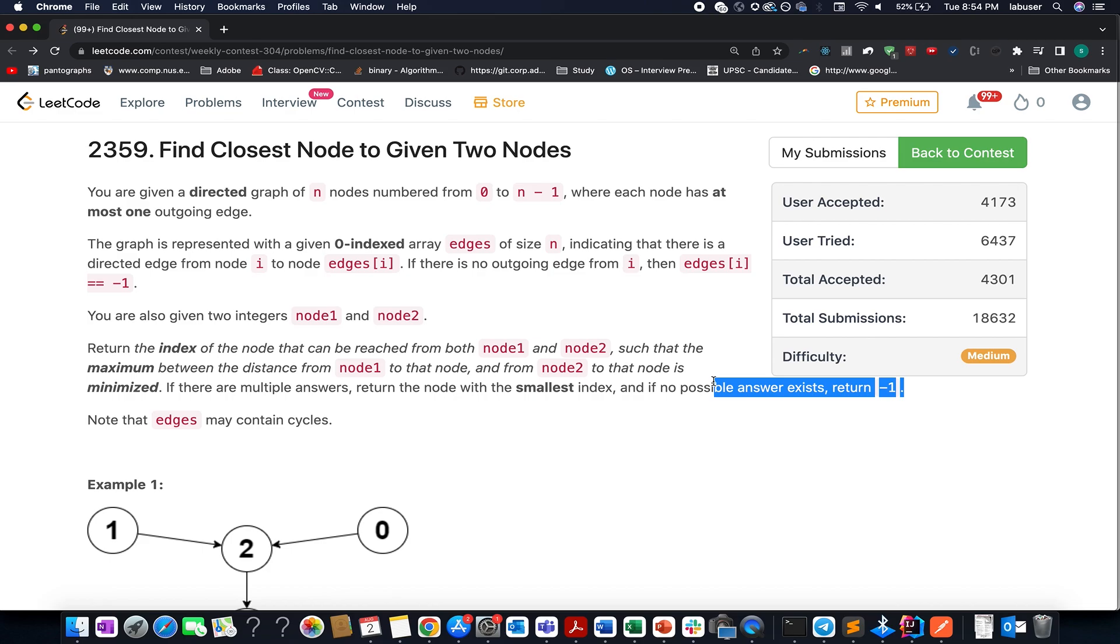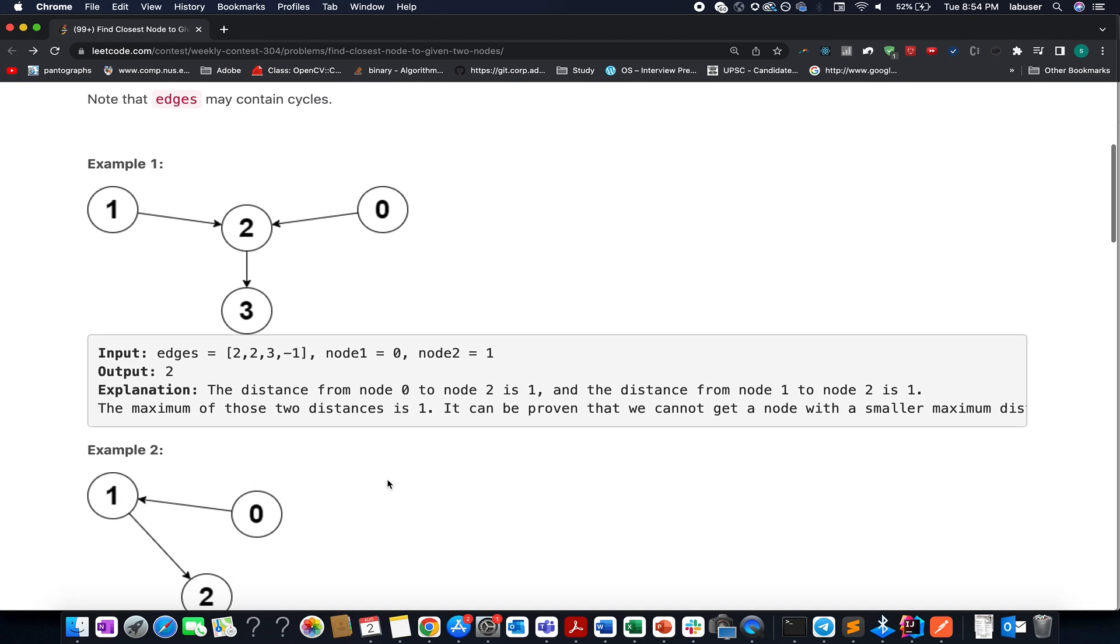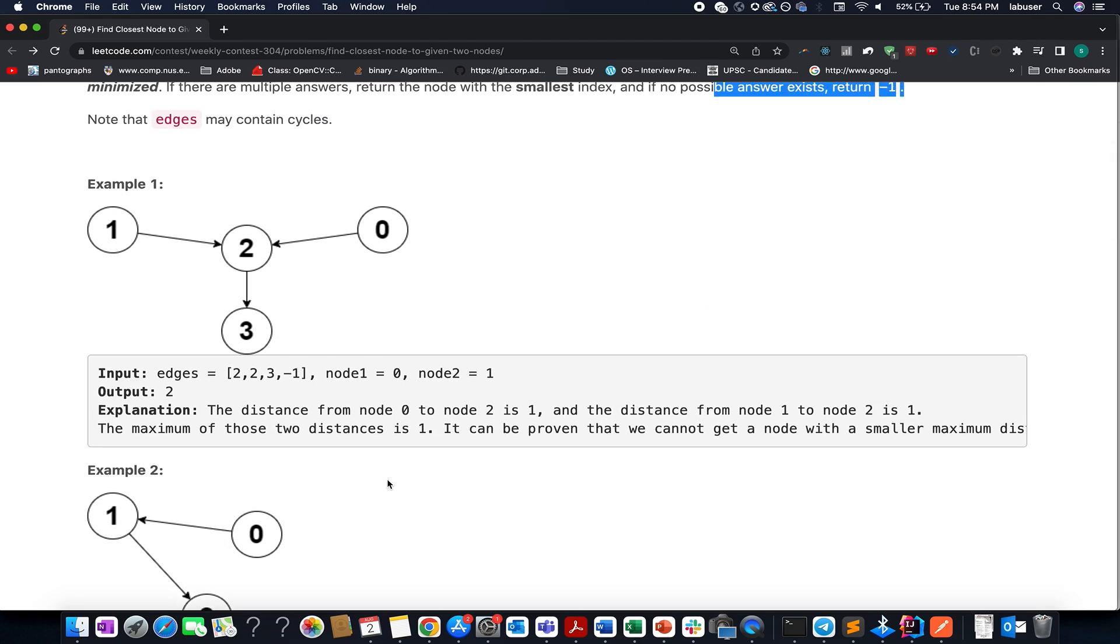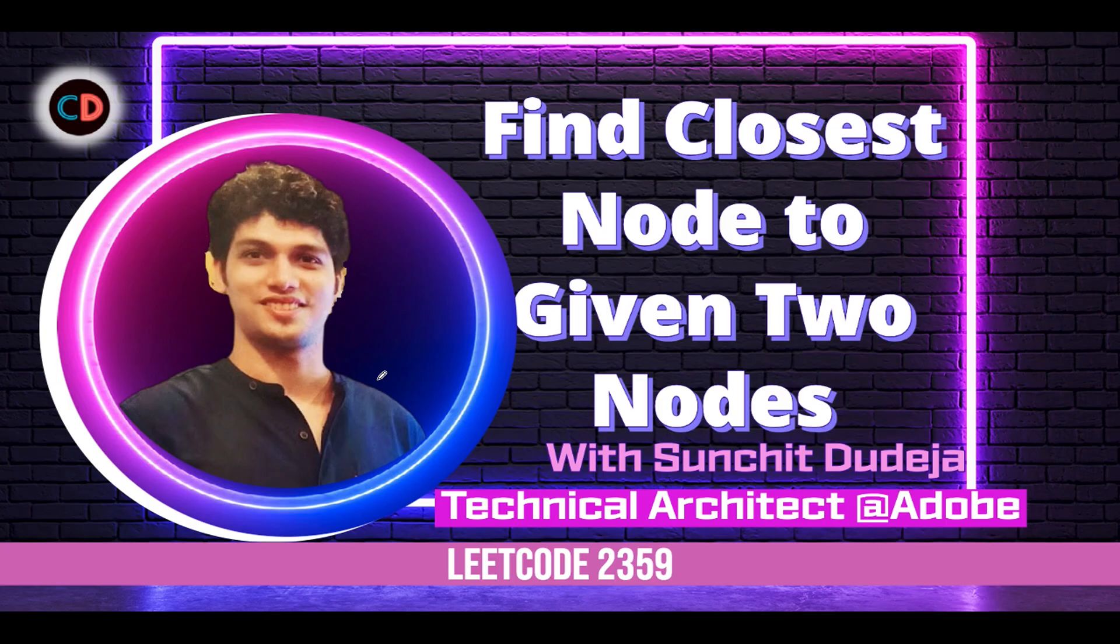So pretty simple to understand. Here they have provided us with an example. I'll be walking you through this example as well as the algorithm by presentation. So let's quickly hop on to it. Find Closest Nodes to Two Given Nodes, LeetCode 2359. It's a medium level question on LeetCode. Also, in case you have any doubt understanding this question, or if you want to ask anything from me in general, please feel free to drop a message on the telegram group or the discord server of Coding Decoded.